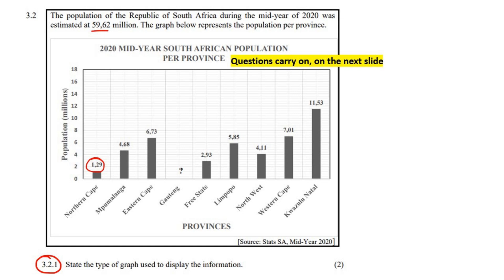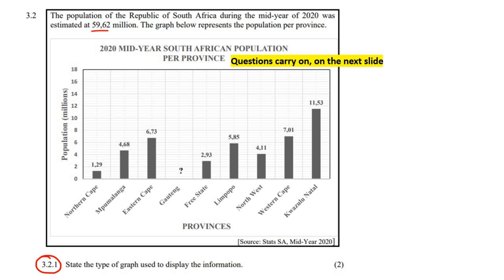The first question says: state the type of graph used to display this information. So whenever you've got these bars and there is a gap in between them, that is a bar graph. So we'll say bar graph.